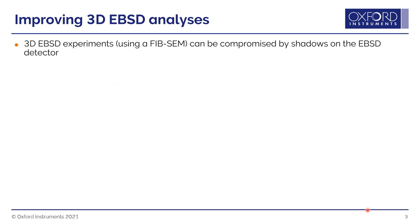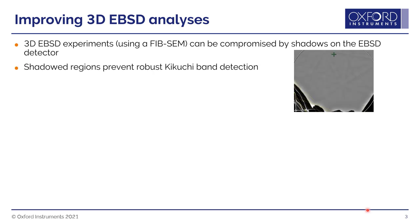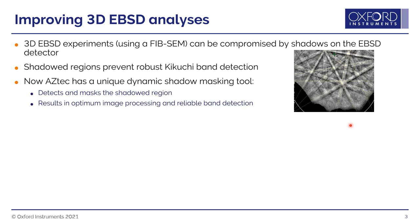We've also worked on improving data collected from 3D EBSD analyses. One problem in such experiments is shadows — the deeper we mill into the sample, the more likely it will be affected by shadows cast onto the edges of the phosphor screen. This makes a mess of standard band detection, picking out the edges of the shadowed region instead of the Kikuchi bands. So we've introduced a unique dynamic shadow masking tool that removes the effect of shadows, giving good quality diffraction patterns and reliable band detection, which in turn means high quality data.